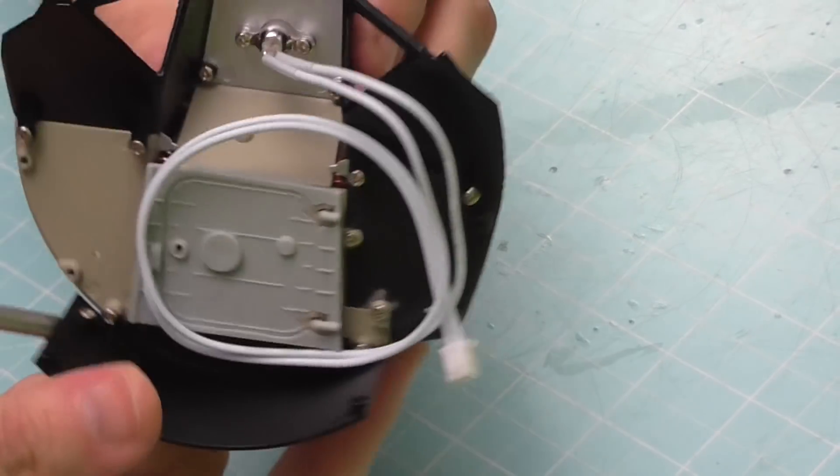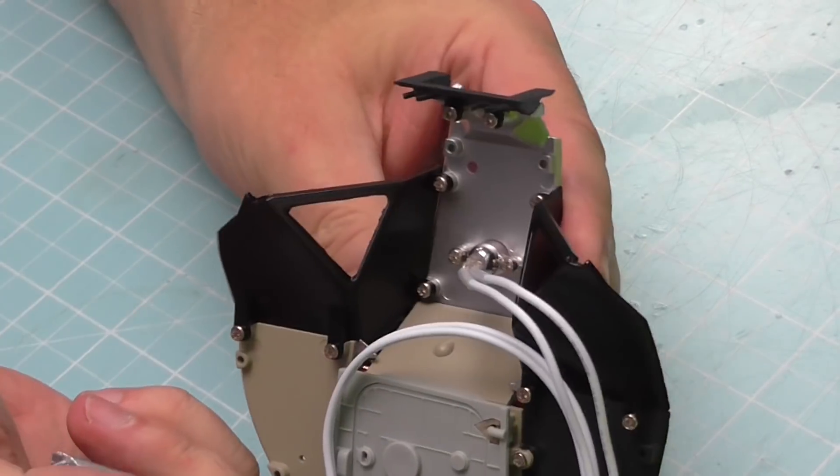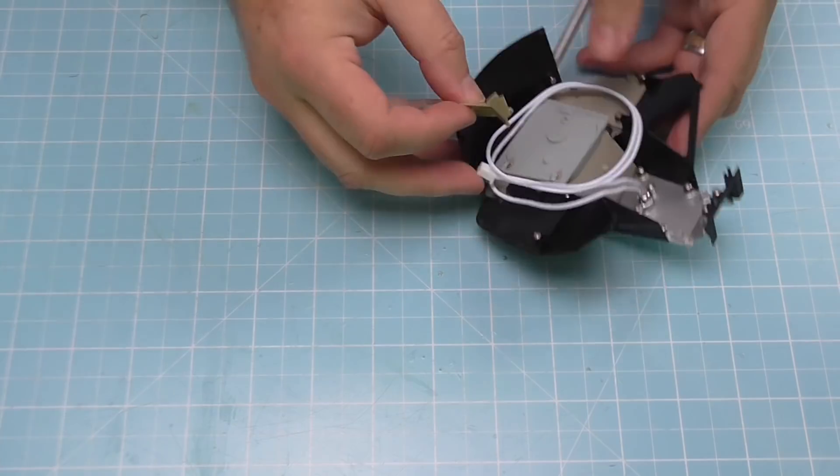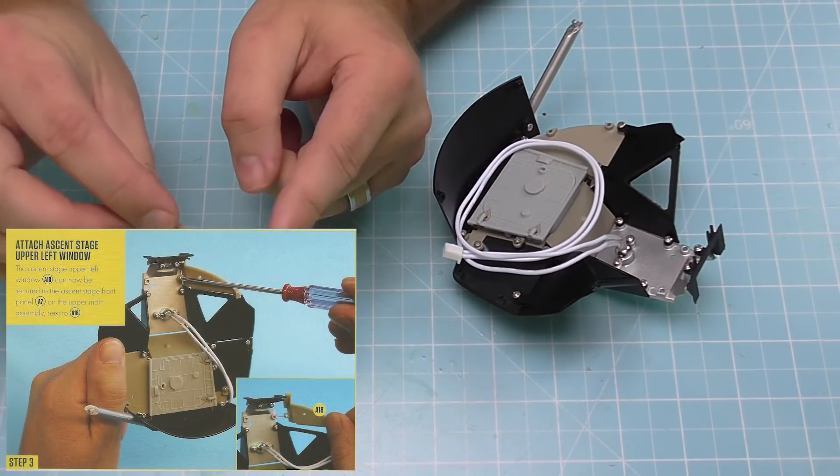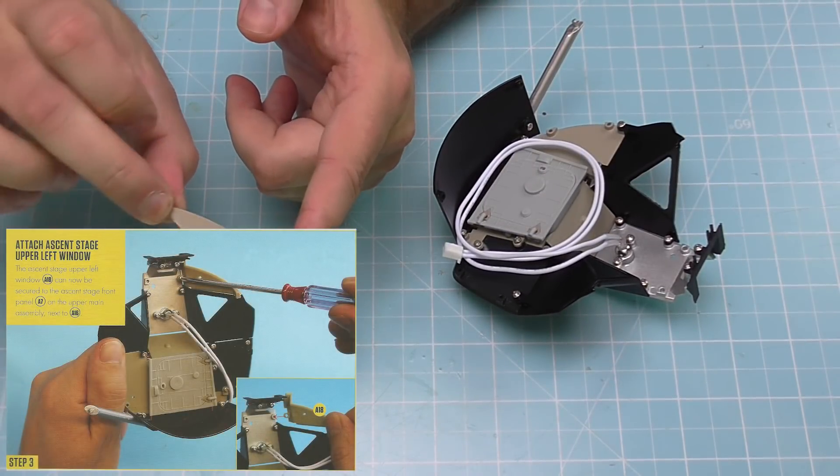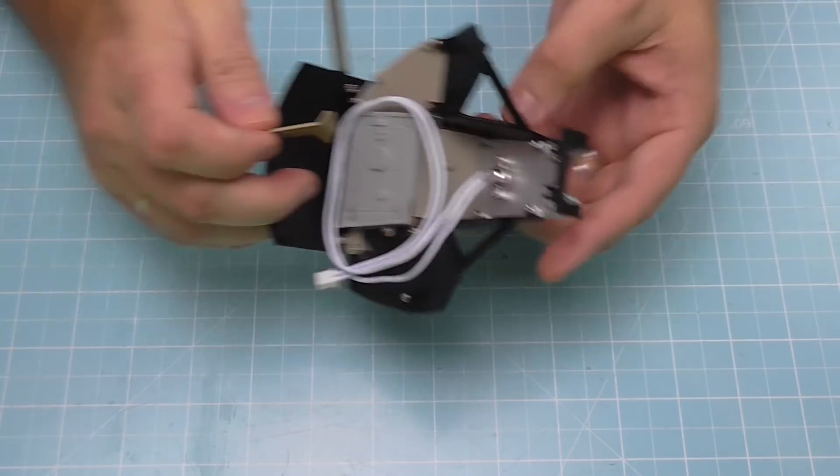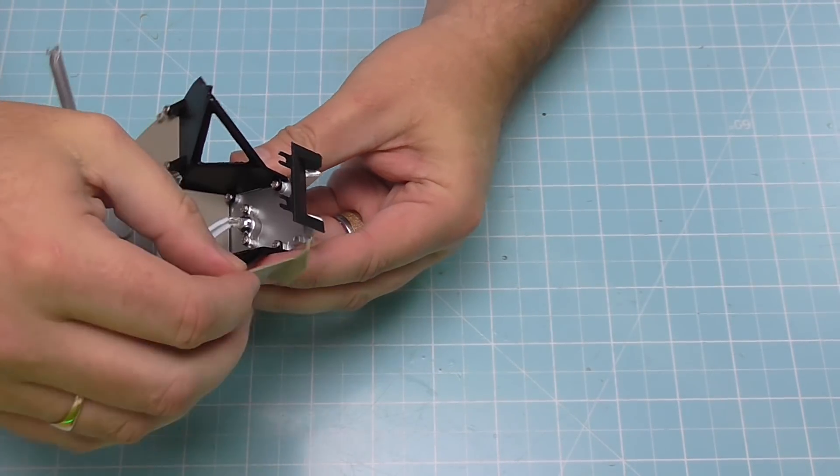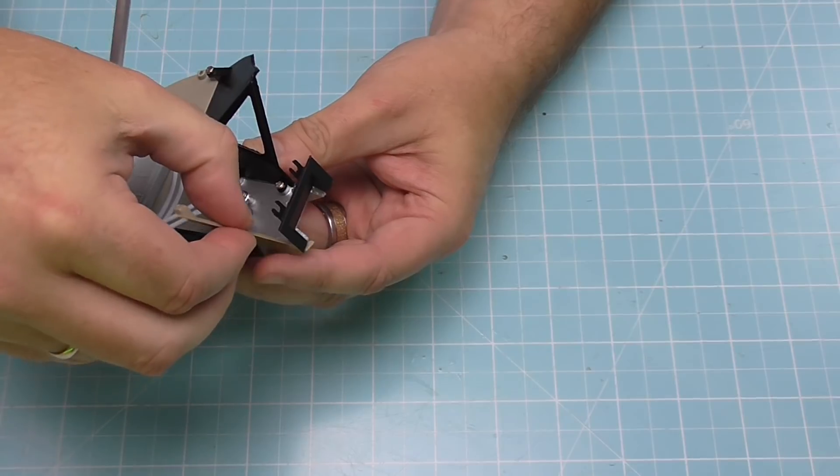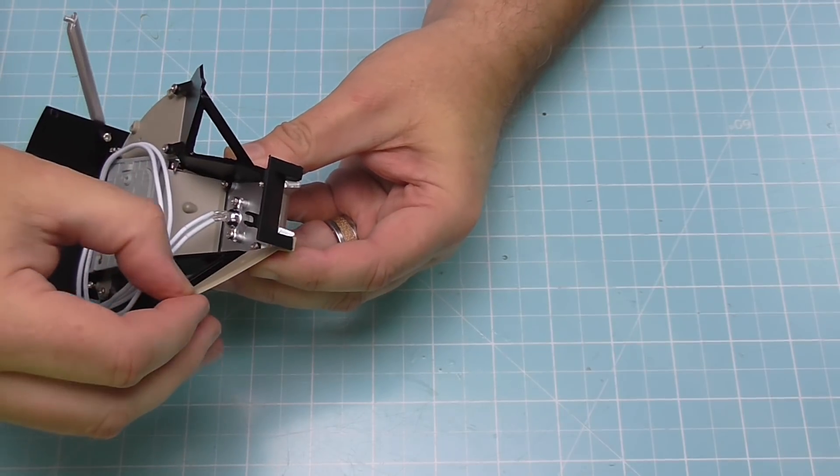Nice and tight. And there we go, that's the top section fitted in, looking just like that. Now we're going to be attaching the ascent stage upper left window bracket, which looks just like this. And just that piece that we put in, this is going to go just to the left of it here.